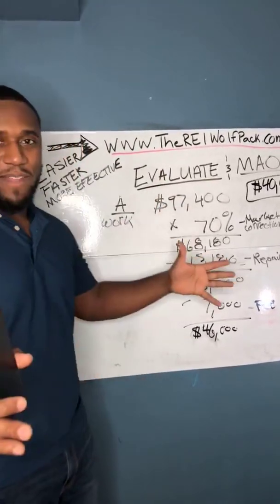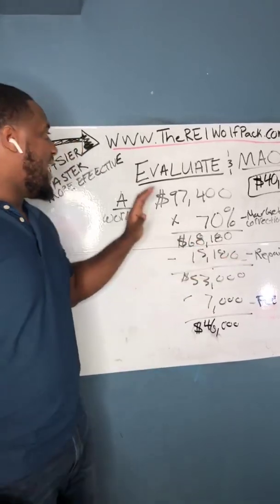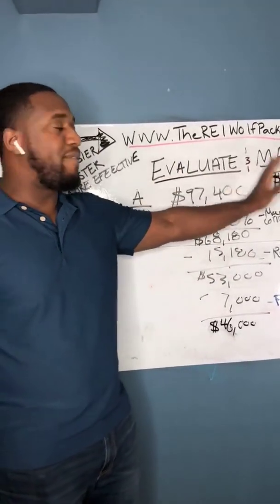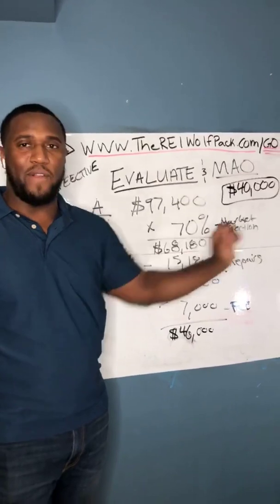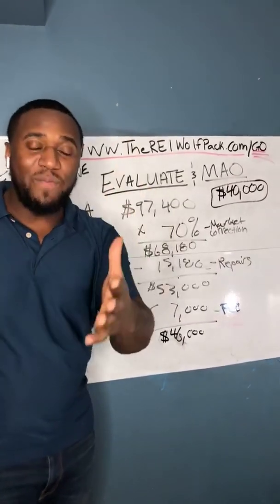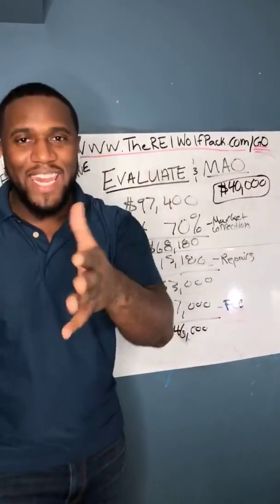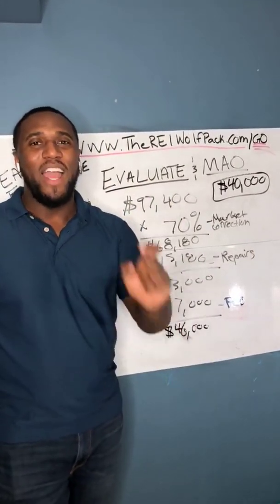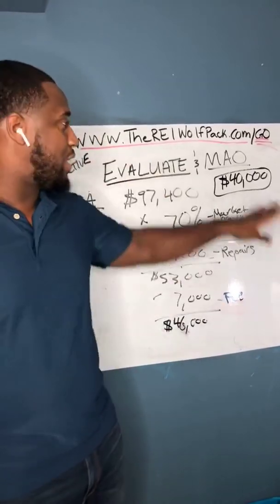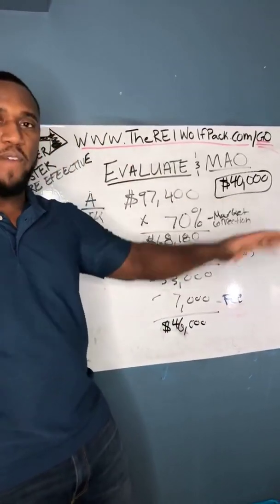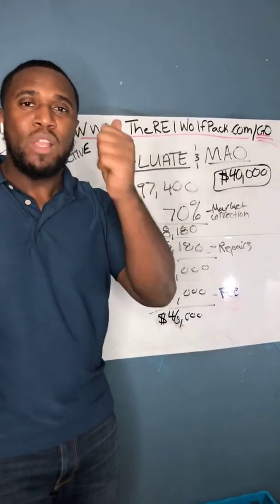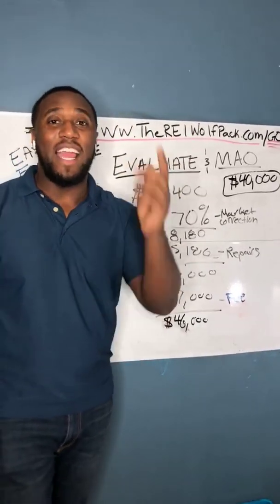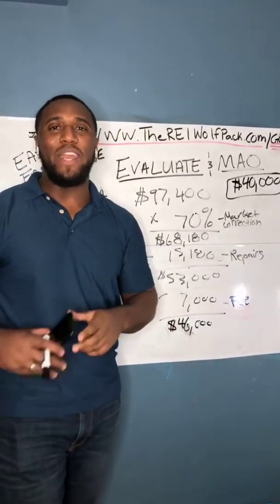All right, that's it for this video. This is how you evaluate and find your maximum allowable offer. In the next video, we're going to be talking about how, once you get your maximum allowable offer, you go see the property, talk with the seller, negotiate, and get the property under contract.